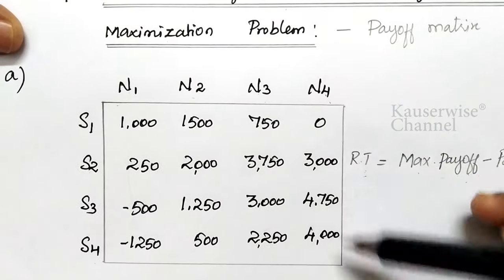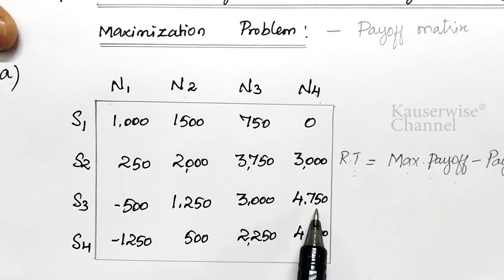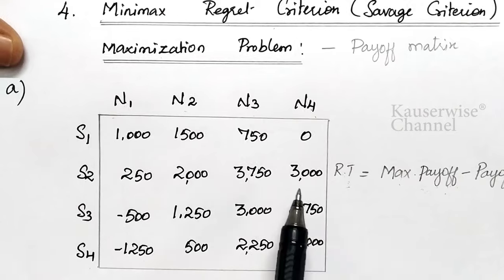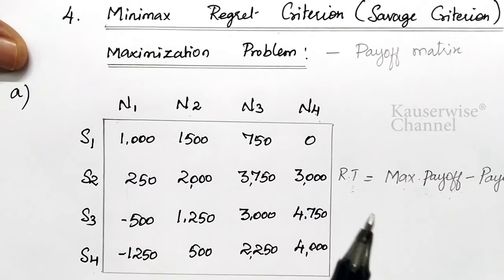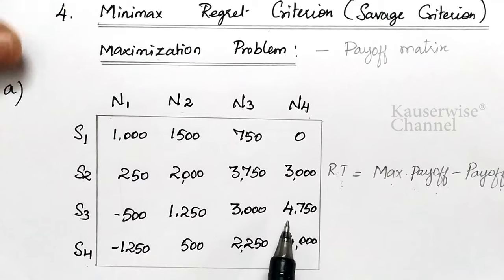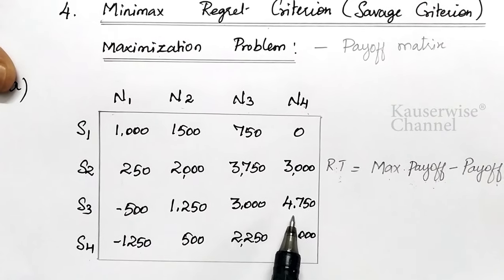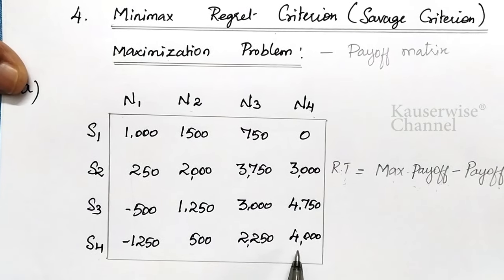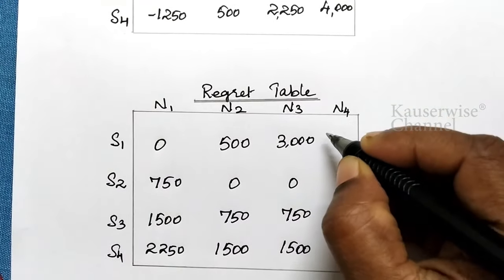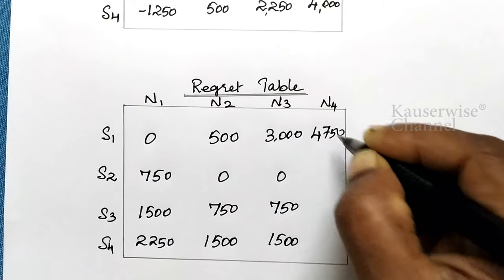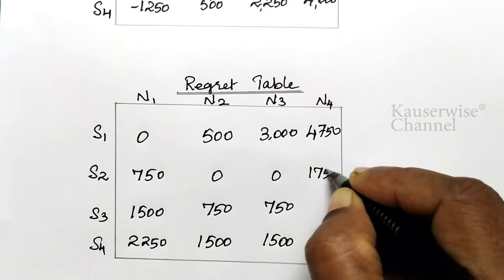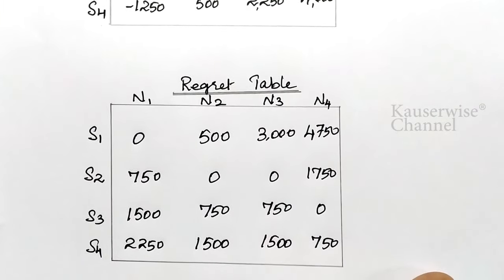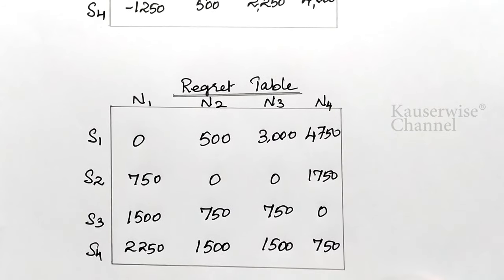For the last event, the highest value is 4750. So: 4750 minus 0 equals 4750; 4750 minus 3000 equals 1750 — wait, 4750 minus 3750 equals 1000 — actually the values are: 4750, 1000, 750, and 0. Enter these values in the regret table. This is the way to construct the regret table for a maximization problem.